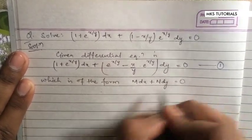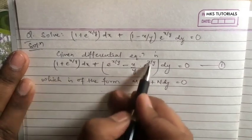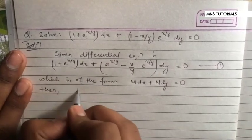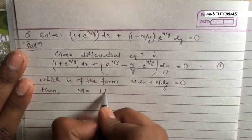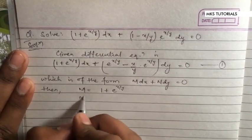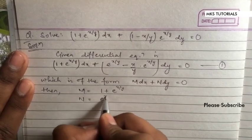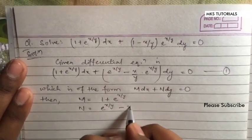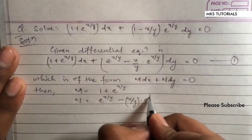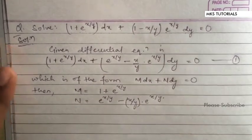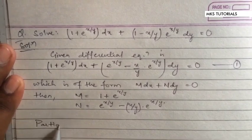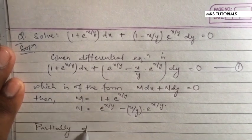Here M equals 1 + e^(x/y), and N equals e^(x/y) minus (x/y) · e^(x/y). Now we will partially differentiate M with respect to y and N with respect to x respectively.